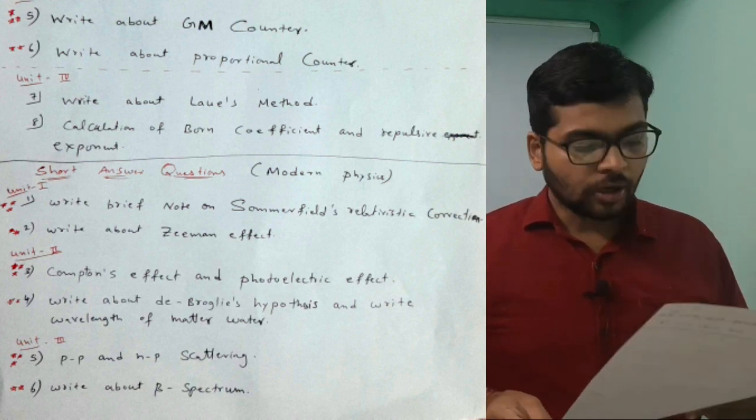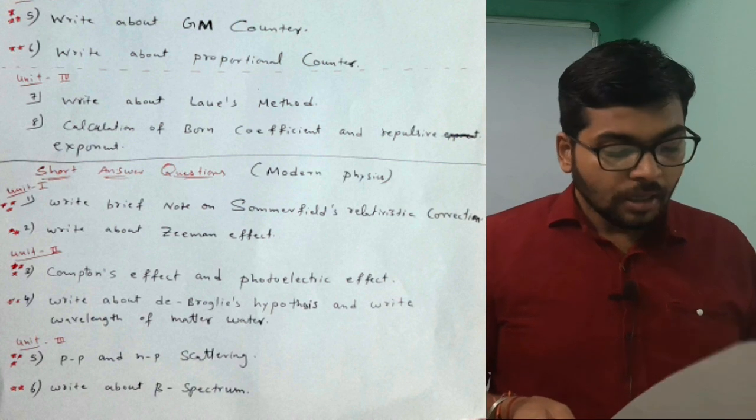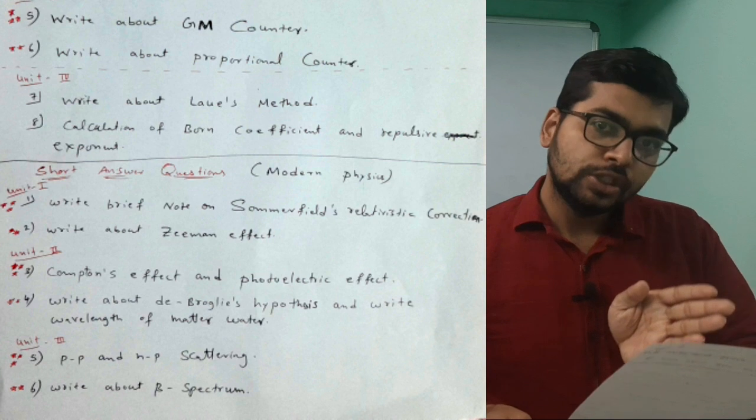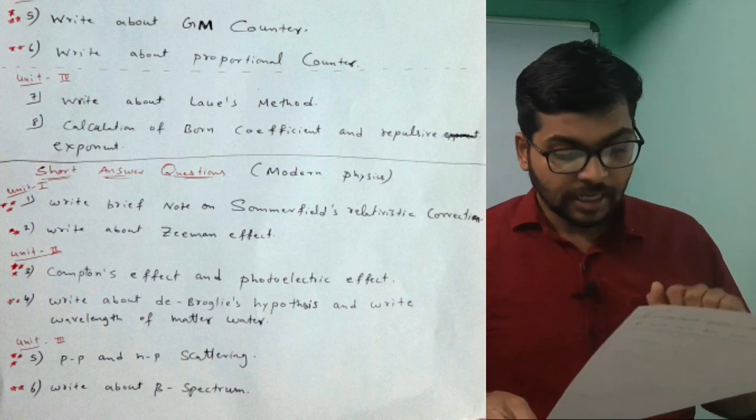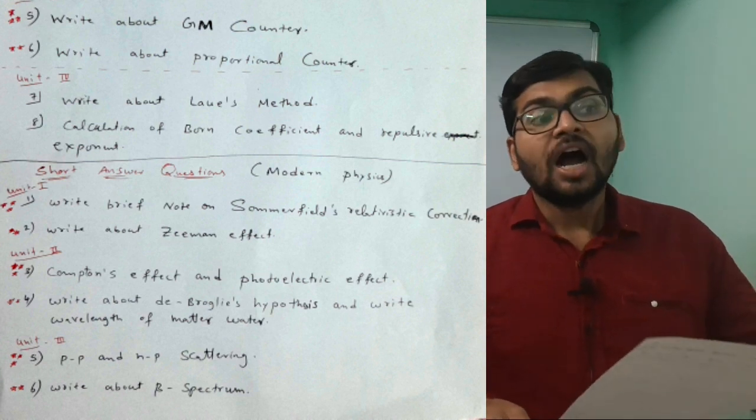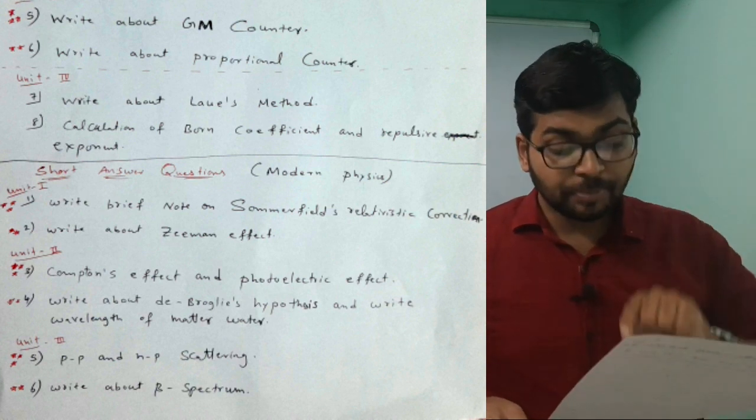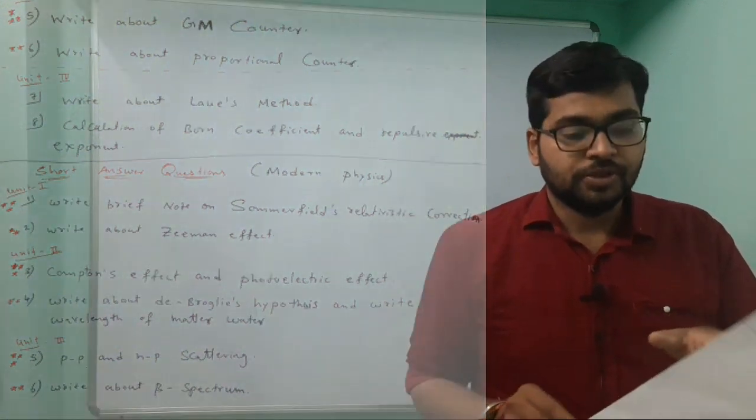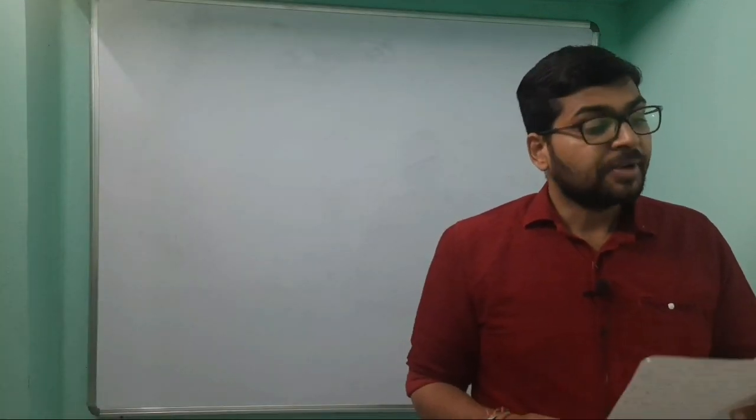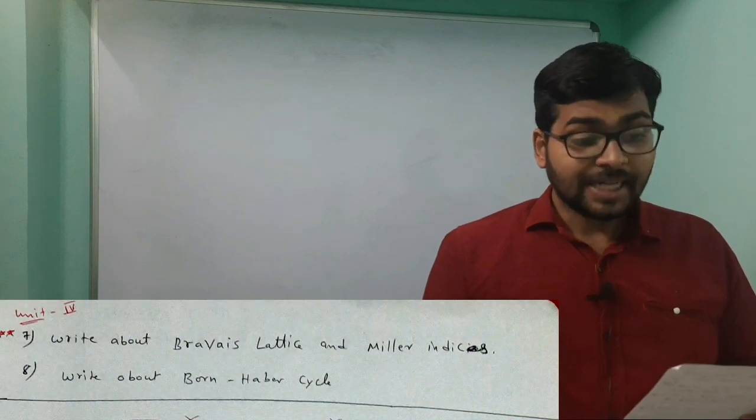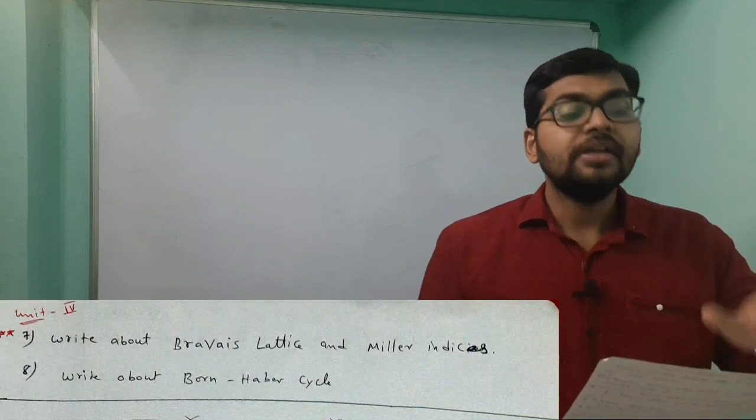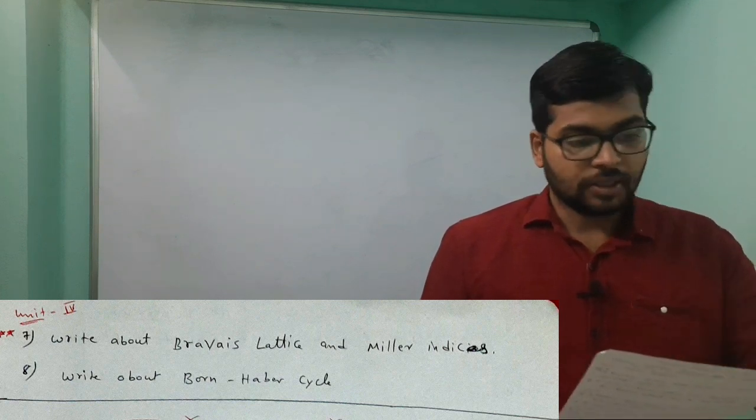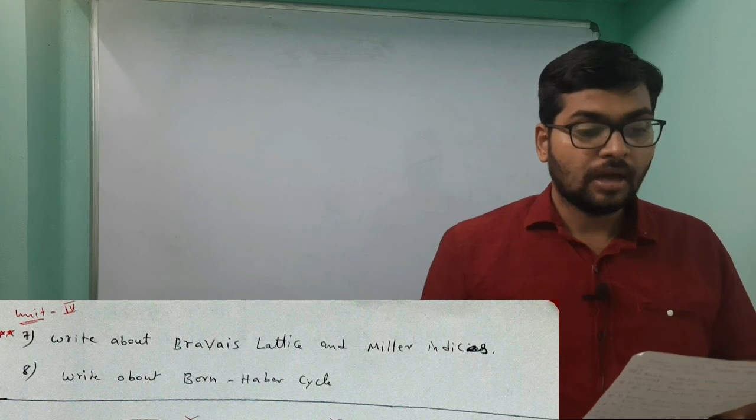Coming to third unit: pp scattering and np scattering - proton-proton scattering, neutron-proton scattering, very much important. Write about beta spectrum - from alpha, beta, gamma spectrums, beta spectrum is very important. Fourth unit: write about Bravais lattice and Miller indices - very very much important in fourth unit. Last question: write about Born-Haber cycle.